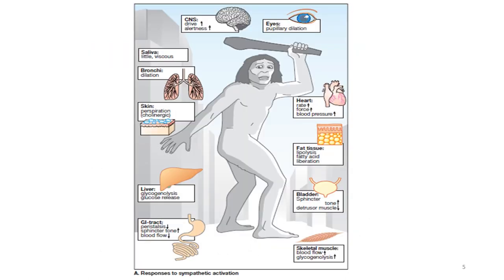In response to fight or flight, our body releases adrenaline and norepinephrine, which affect various organs. Assume a large animal is following you — you have to run away. We need far vision, so dilation of the pupil occurs. More oxygen is required, so the brain becomes alert.